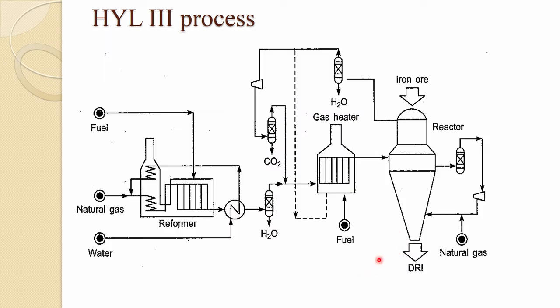This is a typical flowsheet of the HYL-3 process. The reformer is an essential part of this natural gas-based process. Natural gas comes in as fuel for heating, and through the reformer you get the proper CO and hydrogen content into the gas.